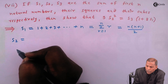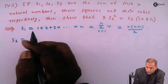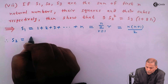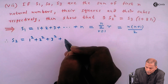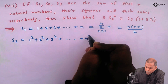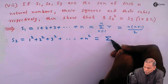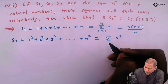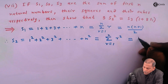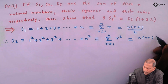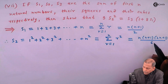Similarly, S2 is equal to the sum of squares of the first n natural numbers. Therefore S2 = 1² + 2² + 3² + ... + n², which in summation notation is the sum of r² from r = 1 to n, and that equals n(n+1)(2n+1)/6.